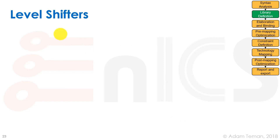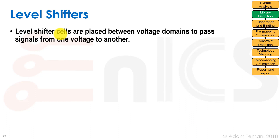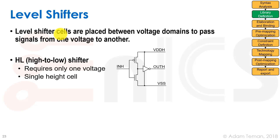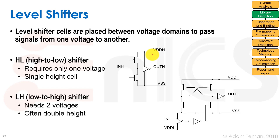Level shifters are a type of buffer placed between voltage domains to pass signals from one voltage to another. A high-to-low shifter is just two inverters needing only one voltage supply; the main reason it needs a special library cell is characterization for different input and output voltages. A low-to-high shifter is more complex — it uses something like a cross-coupled differential CVSL structure to drive the output up to the higher voltage. These must be characterized for both input and output voltages and often come in double-height, occupying two standard cell rows.